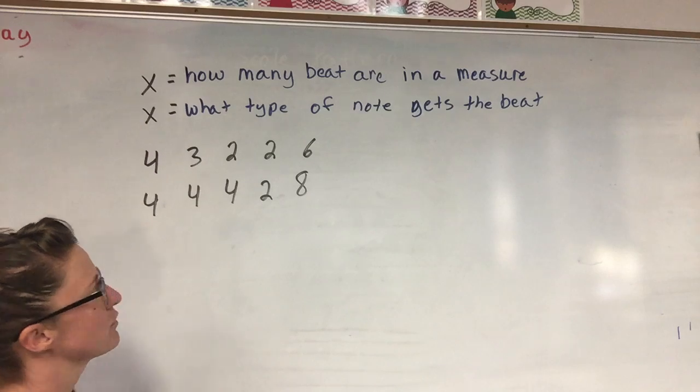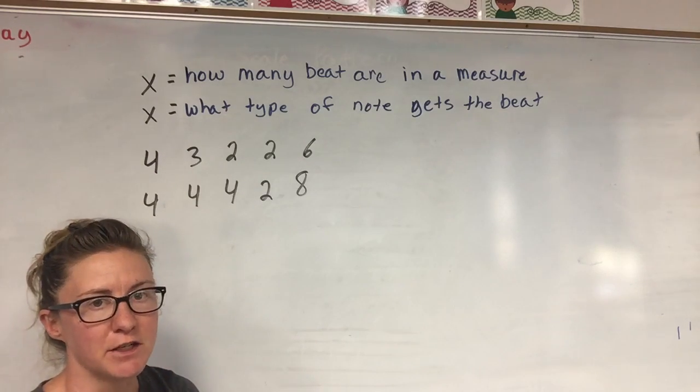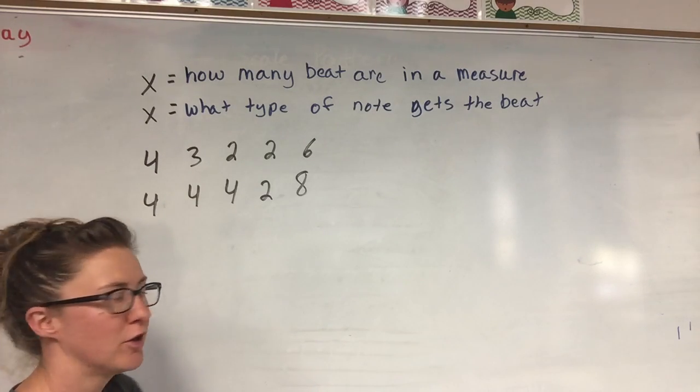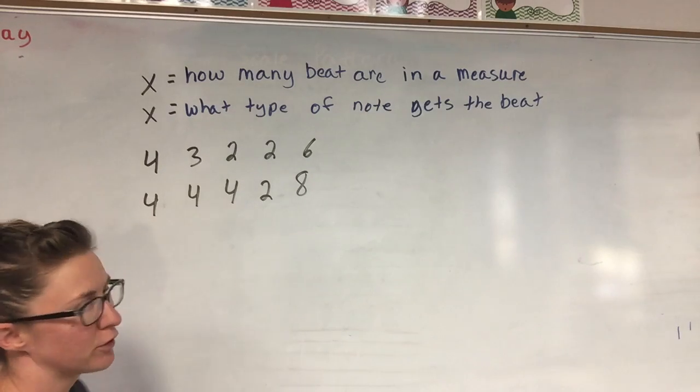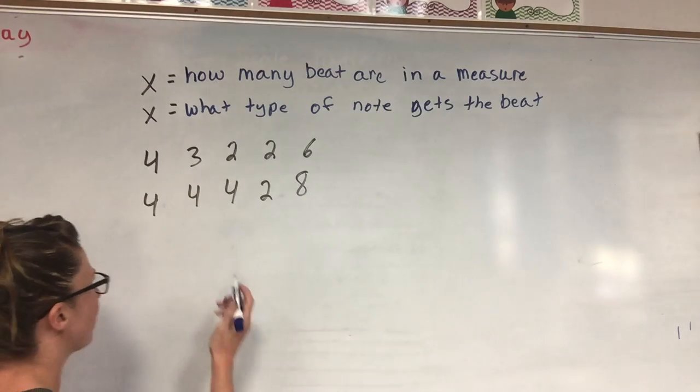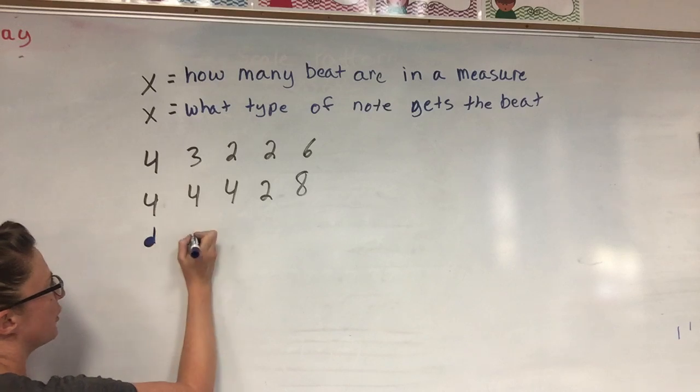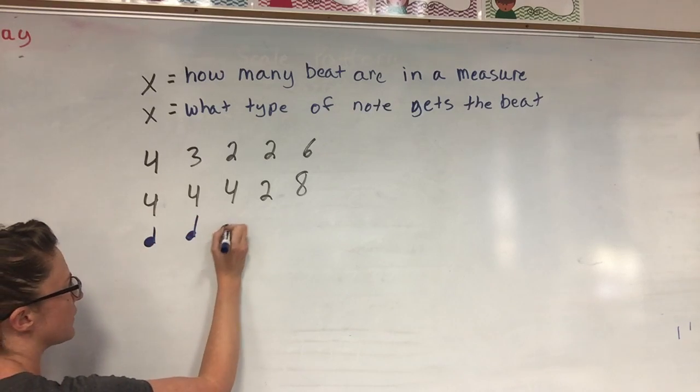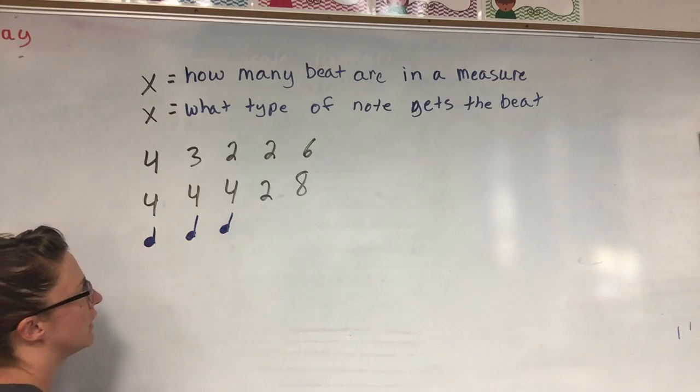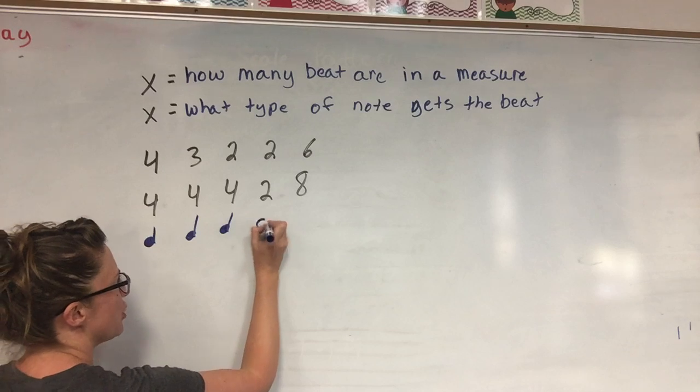The bottom number tells us what type of note gets the beat. When you are looking at that pyramid, there's four quarter notes in that pyramid. Four make a whole. So when there's a four on the bottom, it's going to be the quarter note that gets the beat, and there's a two on the bottom. In my pyramid there was two half notes.